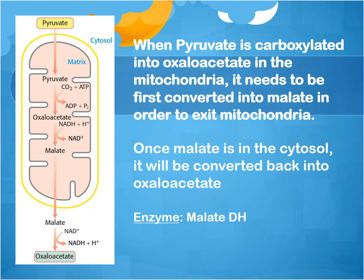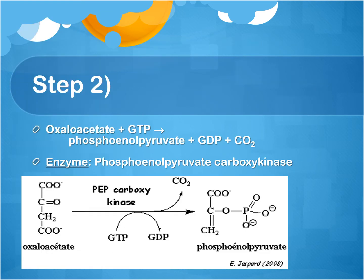Here is a picture of the mitochondria. Pyruvate will enter and be converted to oxaloacetate. However, oxaloacetate can't leave the mitochondria, so it has to be converted into malate first. The malate will leave the mitochondria and go out into the cytosol, where it will be converted back to oxaloacetate. The enzyme used in this mechanism is malate dehydrogenase.